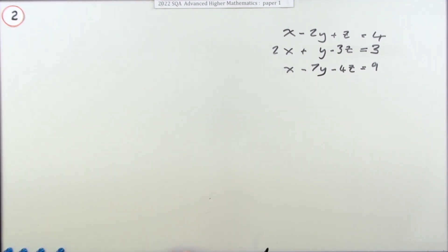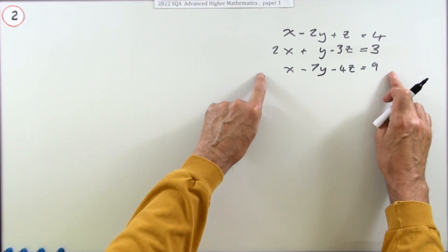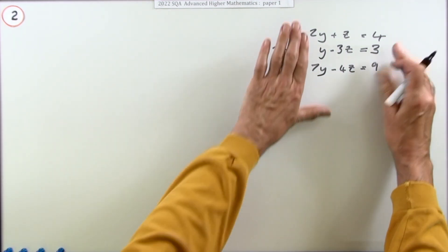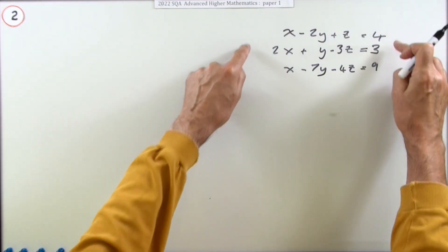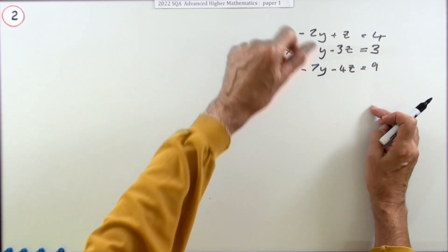It's just the same technique that you're used to with two equations in two variables. You just take them in pairs and multiply and add them in order to get rid of one of the variables. The only thing is you'll have to do that twice.